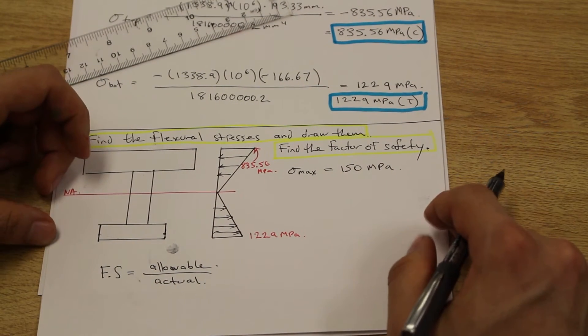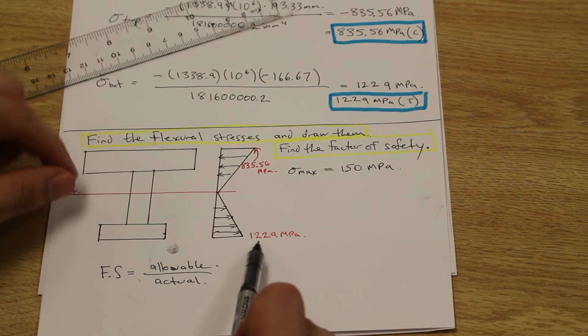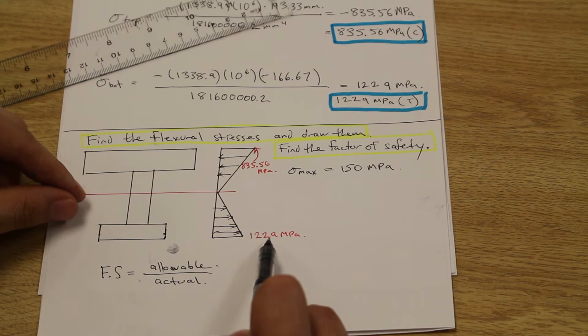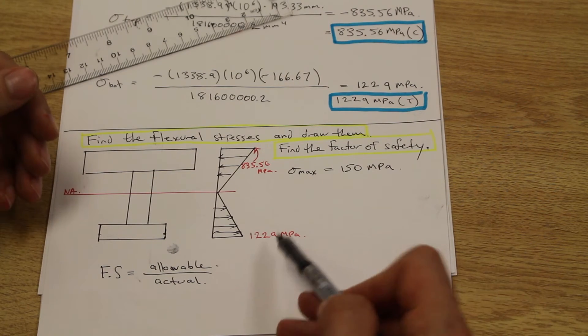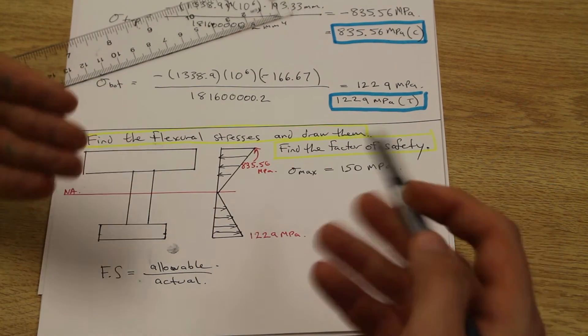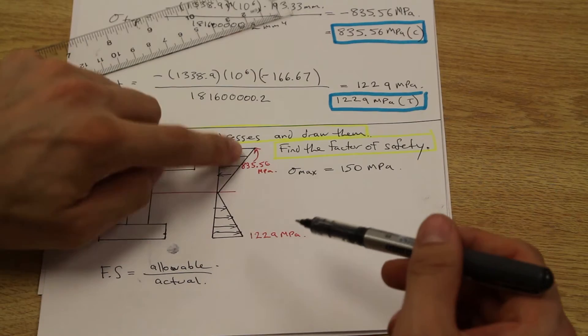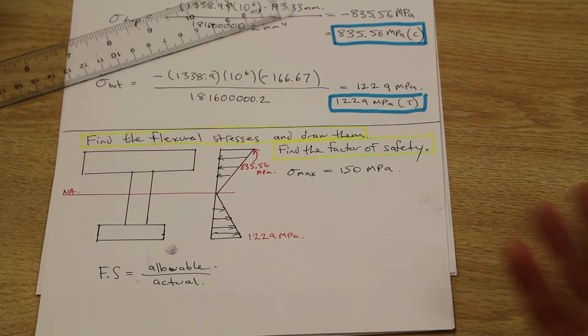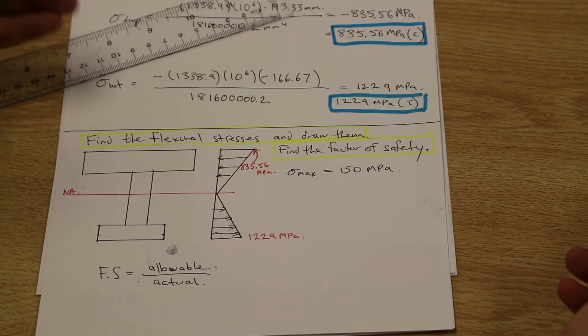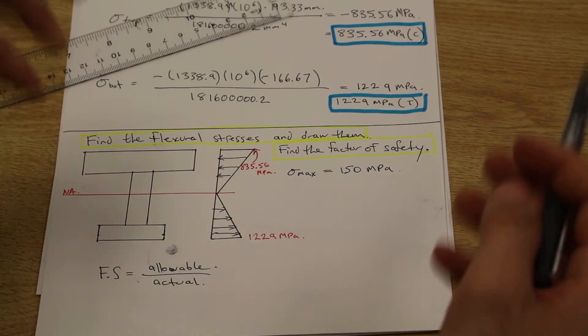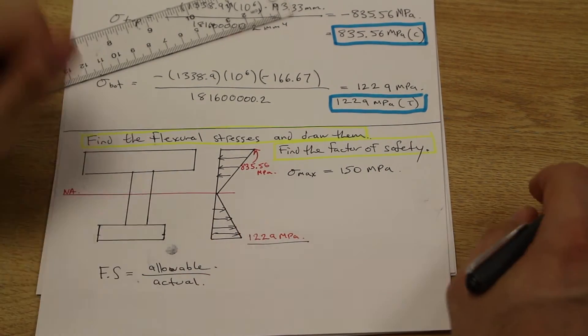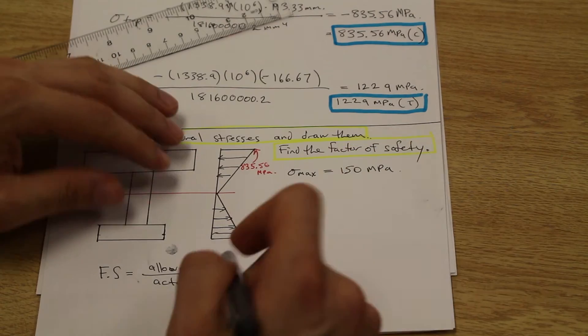And when we're calculating the factor of safety, we're going to calculate based on the largest flexural stress. The reason for that is that is our critical stress that we wanted to design for. We're not going to choose the smaller one and design for that because if there's a bigger stress on the beam, it's a little bit useless to design for the smaller stress, right? So we want to design for the maximum stress on the beam, which is 1,229 MPa.